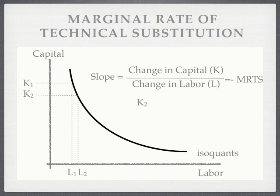It's a relatively simple equation. The slope of the line is capital two minus capital one, divided by labor two minus labor one. That's the slope of the line.